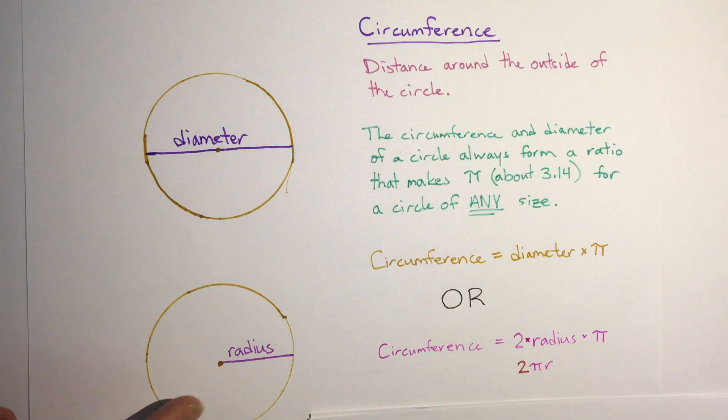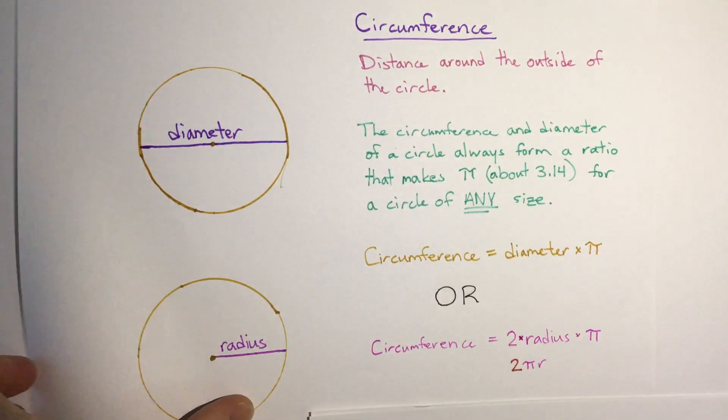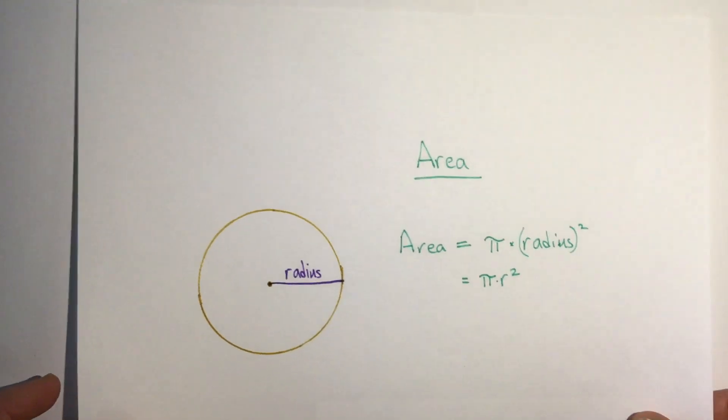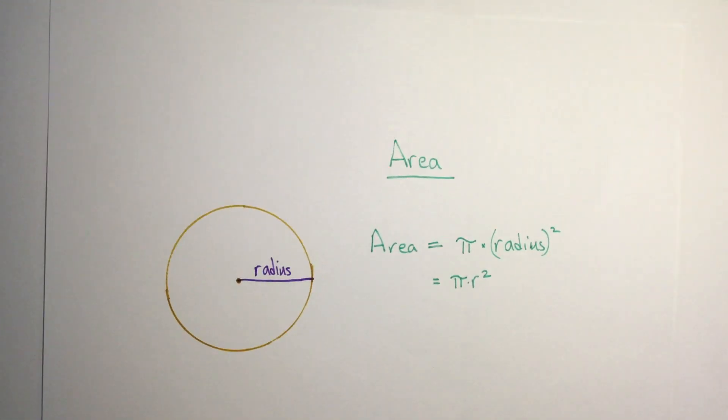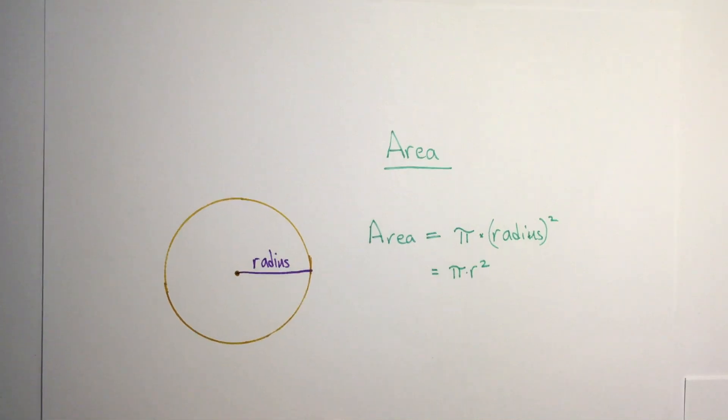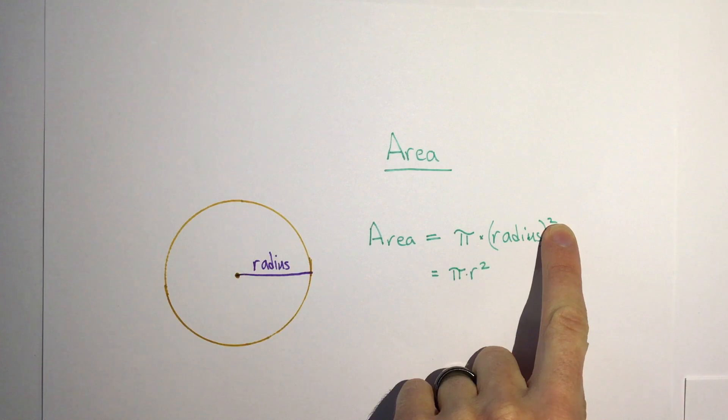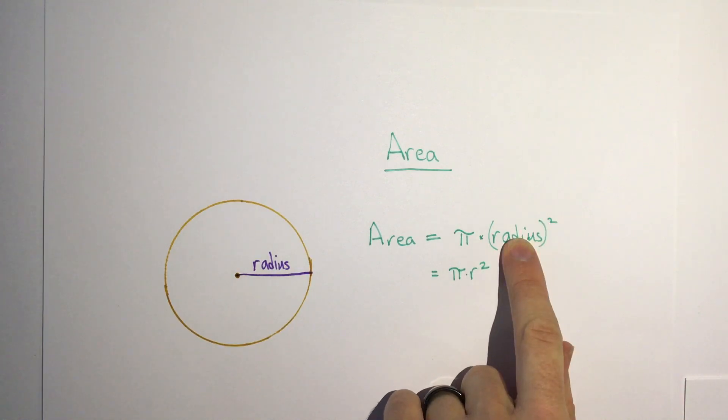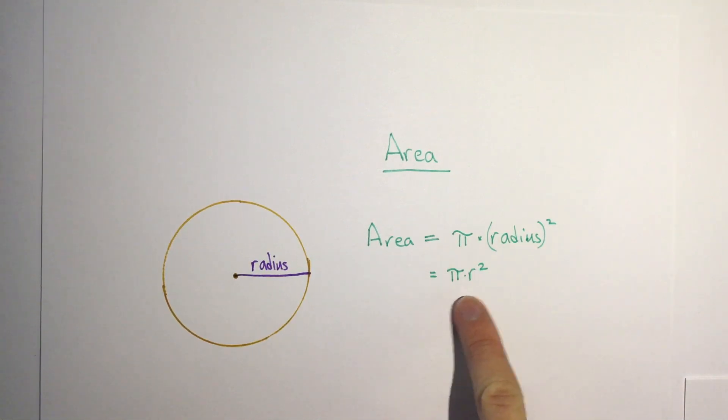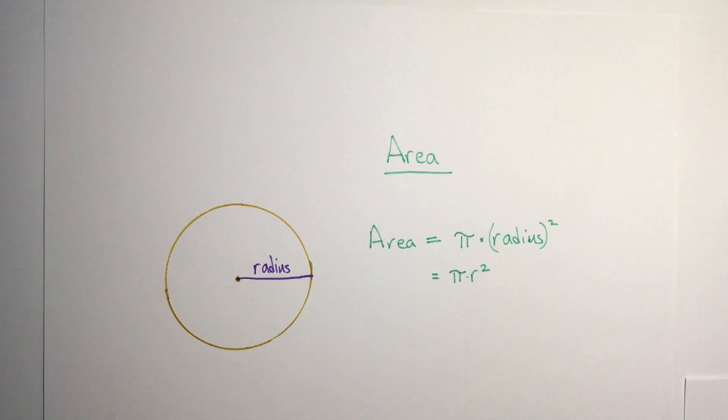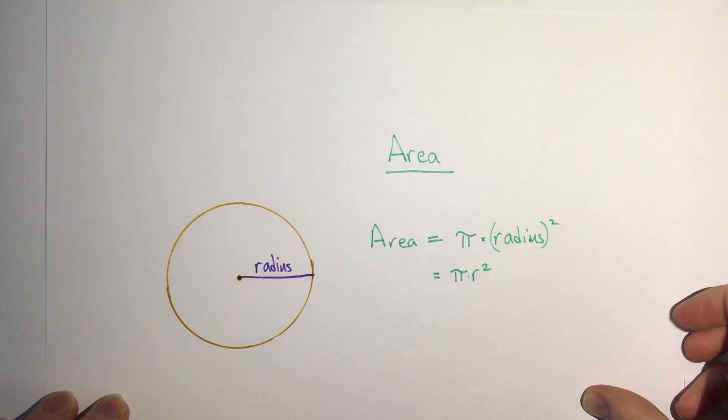We'll look at how to use those formulas, but before we do that we're also going to look at the formula for the area of a circle, or the space inside of a circle. The area of a circle uses the radius and it's pi times the radius squared. Remember squaring means multiplying by itself, so it means pi times radius times radius, or as it's written shortly, πr².